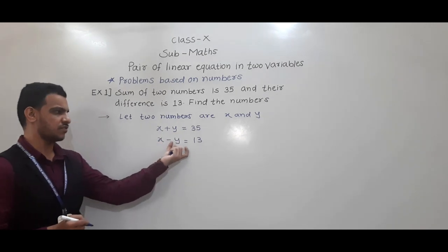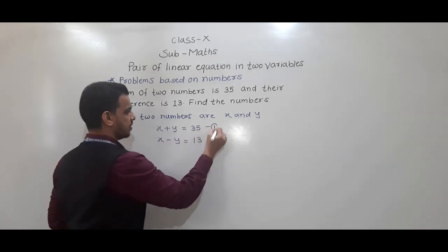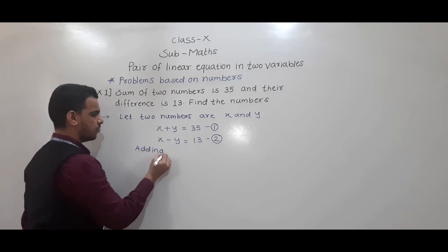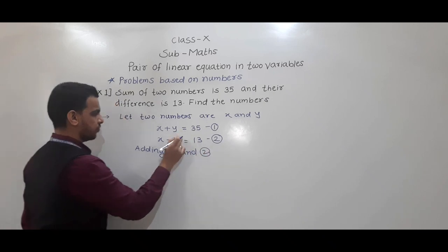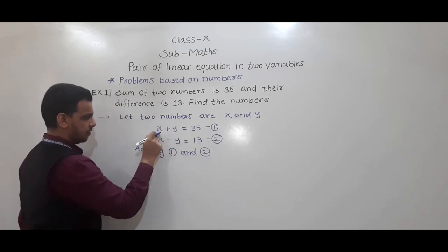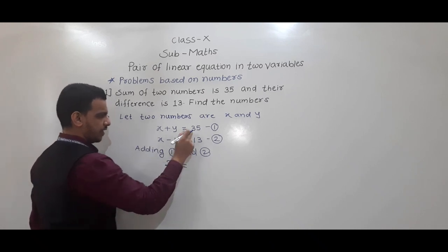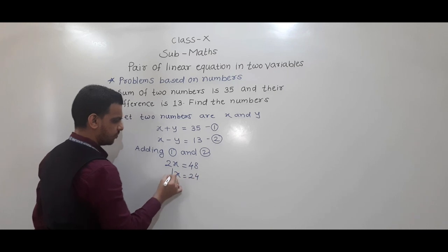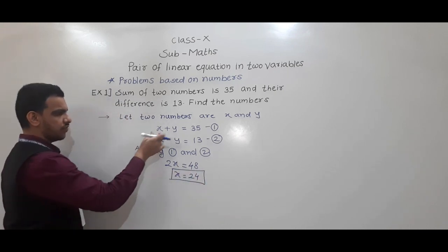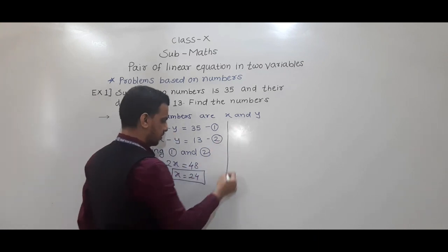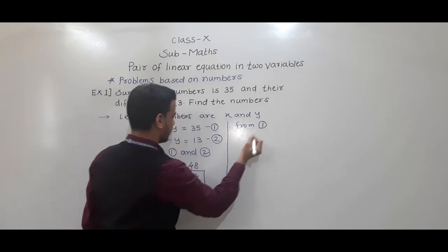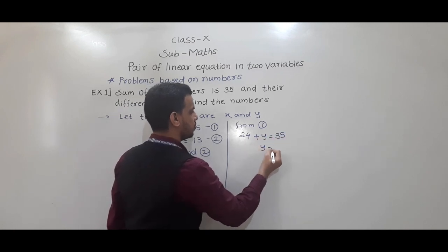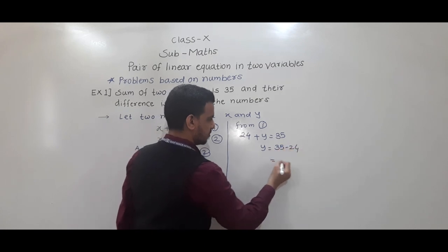So x plus y equals 35 and x minus y equals 13 are two linear equations. Adding equations 1 and 2: plus y and minus y cancel, x plus x gives 2x, and 35 plus 13 is 48. So x is equal to 24. Putting x equals 24 in equation 1: 24 plus y equals 35, so y equals 35 minus 24, that is 11.